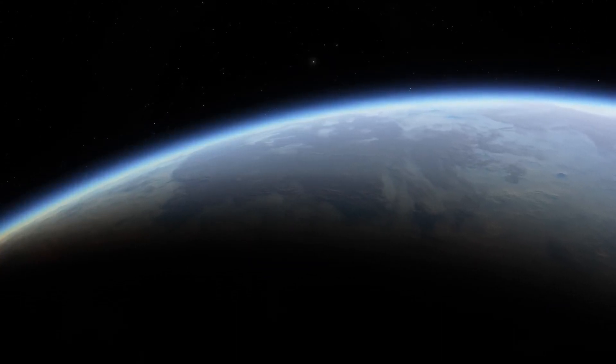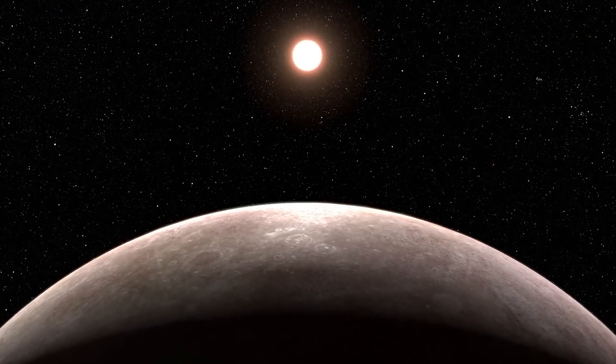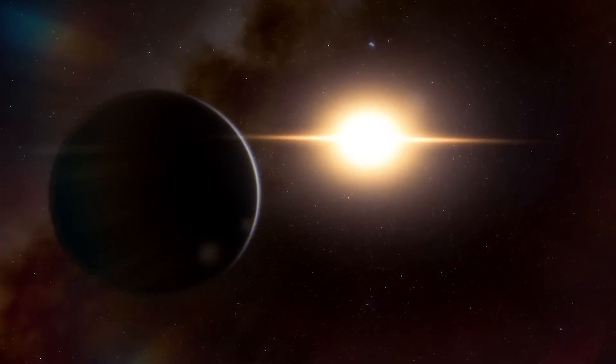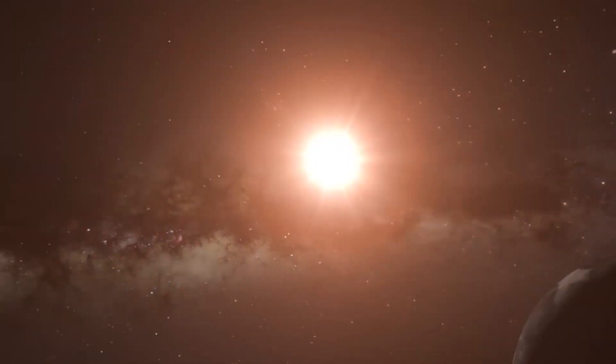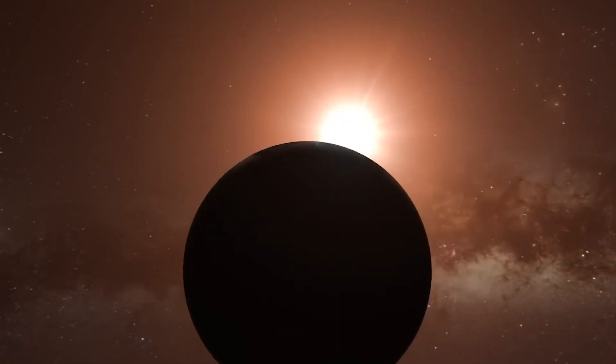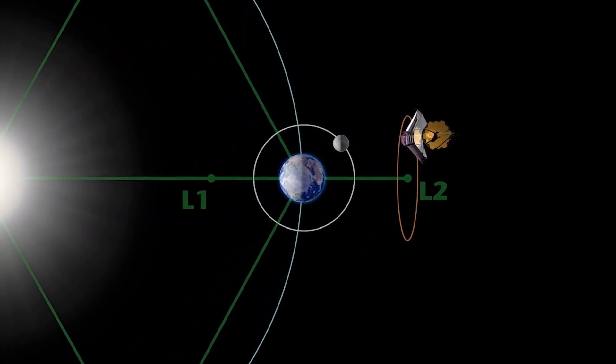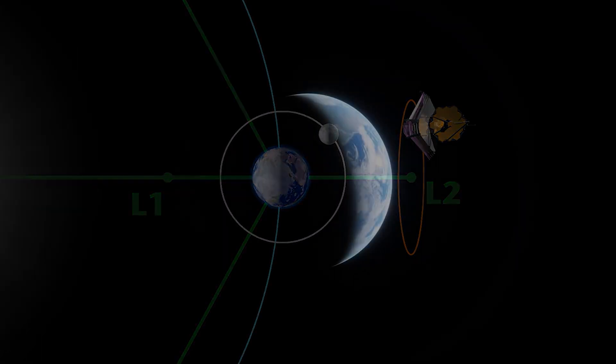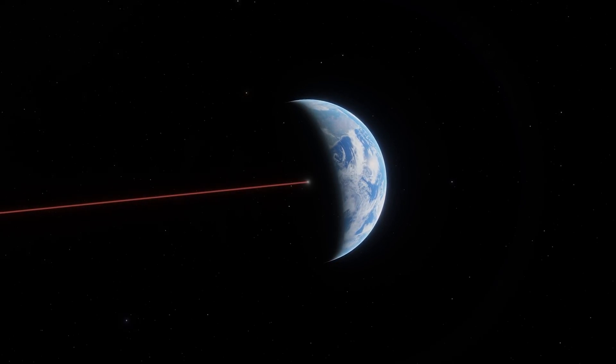The temperature variation on Proxima b, as determined by its atmospheric composition, is an intriguing topic for astronomers, and the JWST can effectively probe the planet's thermal emissions to provide crucial data on its atmospheric properties. In addition, JWST's orbit around the Earth aligns with the orbit of Proxima b, allowing full observations of its diurnal and nocturnal cycles in 11.2 Earth days.